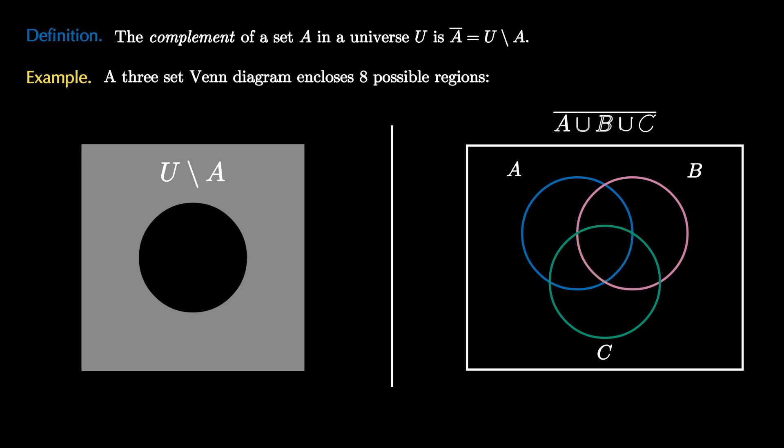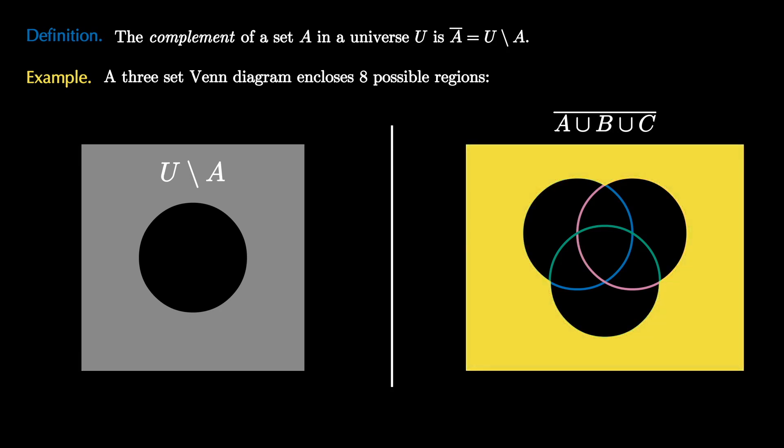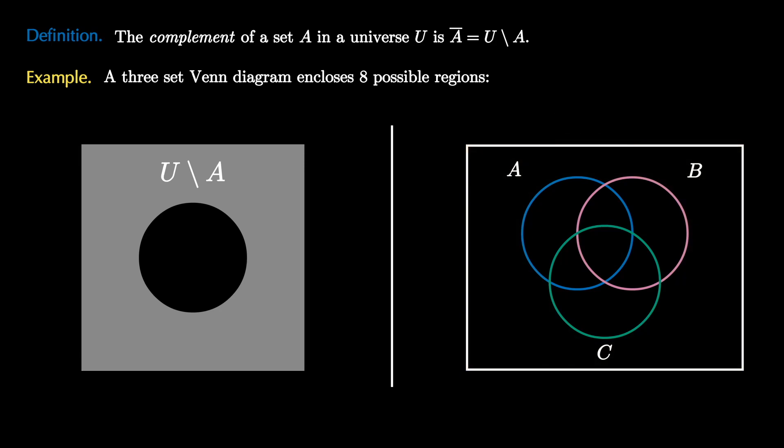That's seven regions, and so the eighth region are the collection of things in the universe that are not in any of the sets, or the complement of A union B union C pictured here. Can you draw a proper four-set Venn diagram that will enclose 16 regions?